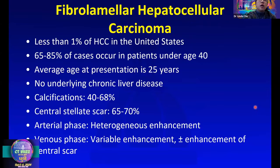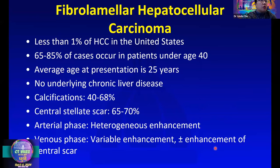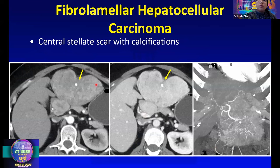I'd also like to mention a subtype of HCC called the fibrolamellar subtype. It's less than one percent of HCC in the United States, usually occurring in younger patients without underlying chronic liver disease. We see calcifications and a central stellate scar. On arterial phase, there may be heterogeneous enhancement, and on venous phase, variable enhancement of both the lesion and the central scar. Here's an example of fibrolamellar HCC — a heterogeneously enhancing mass on arterial phase with a central scar and calcifications. On the coronal MIP, you can appreciate tumor neovascularity with irregular feeding vessels, indicating an aggressive lesion.